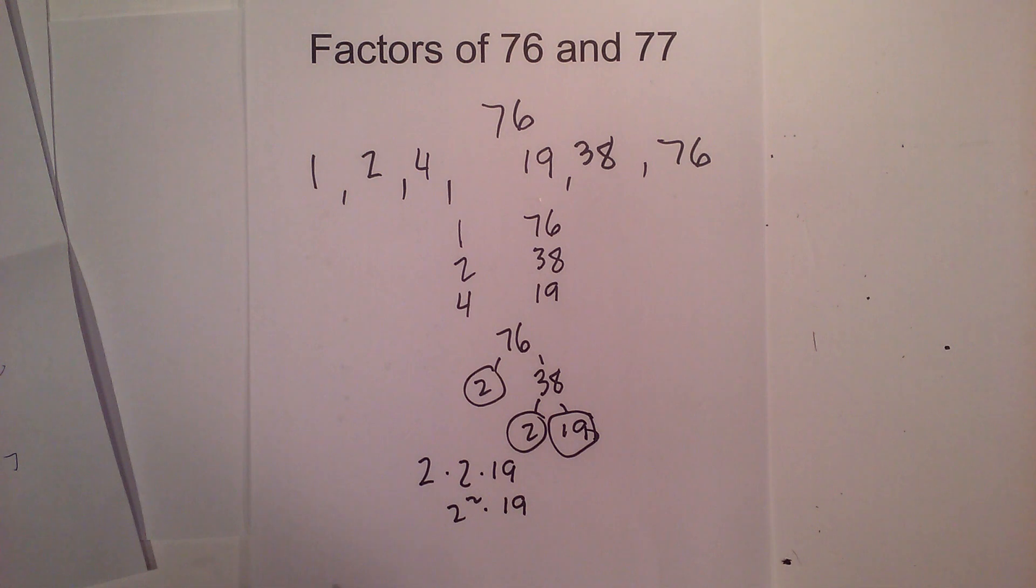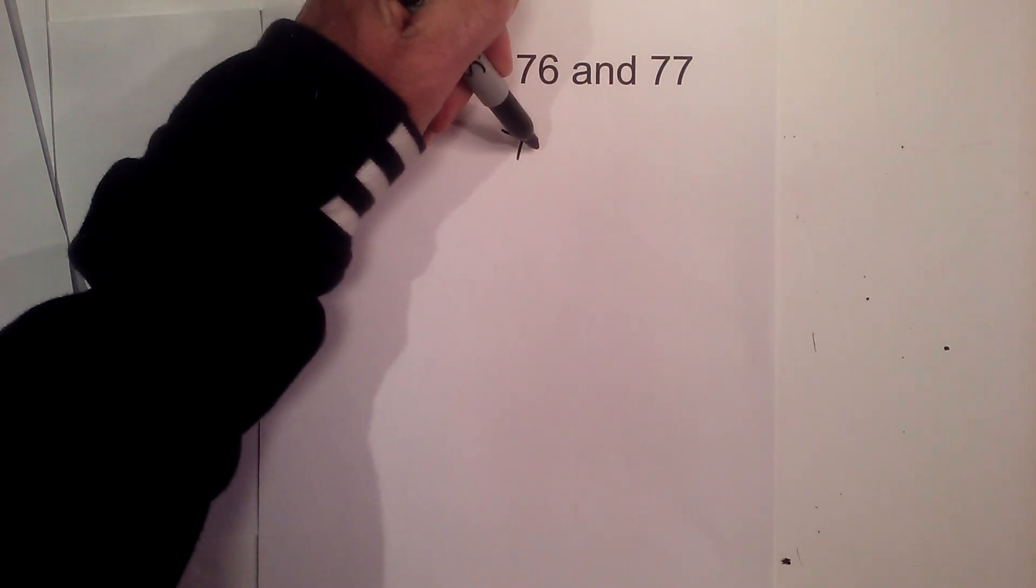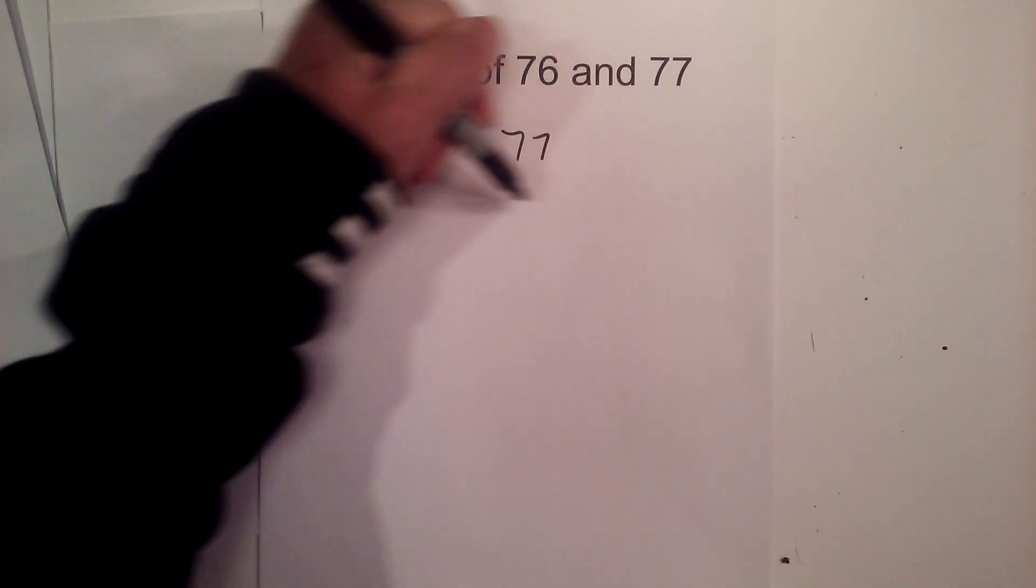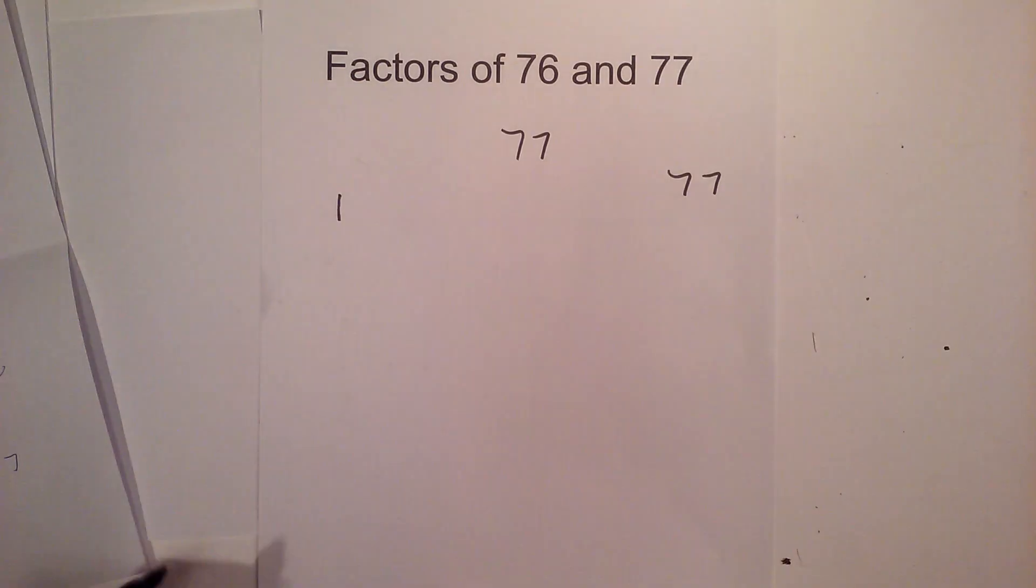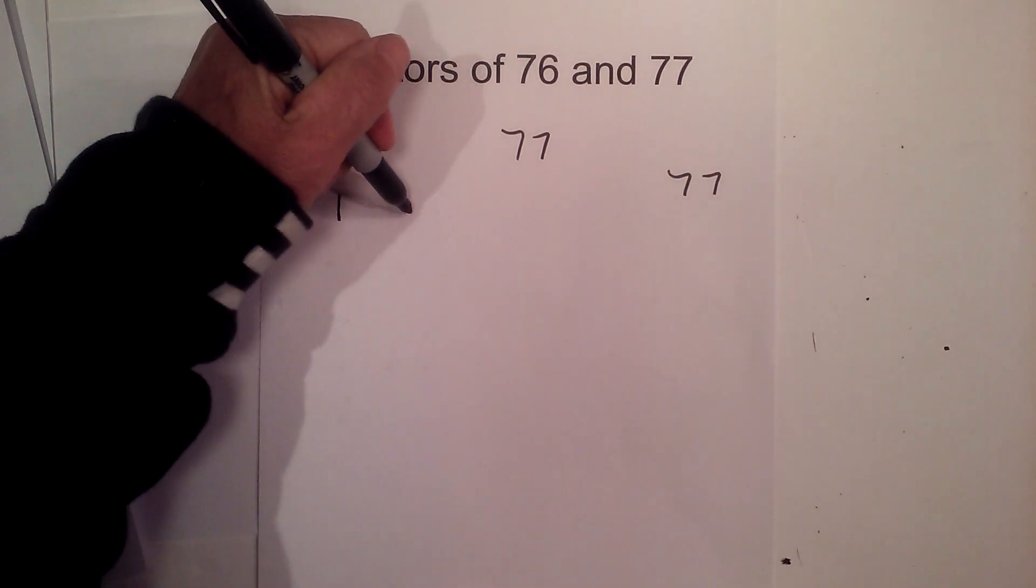Now, let's look at 77. The factors of 77 will not take long. They are 1 times 77. And then 2, 3, 4, 5, 6 will not go in.